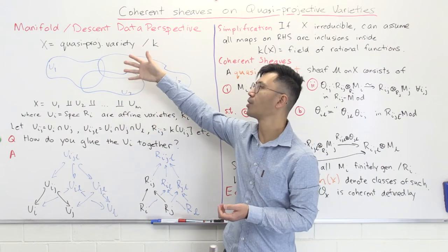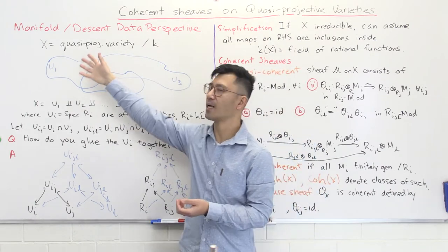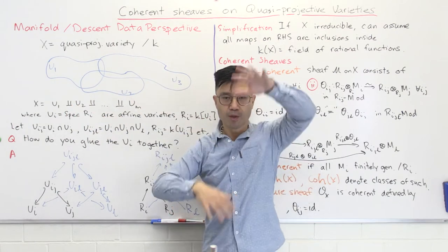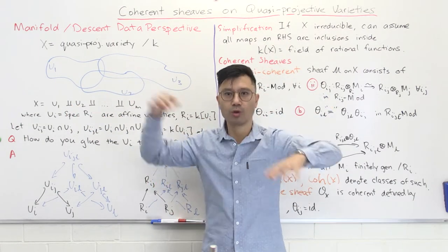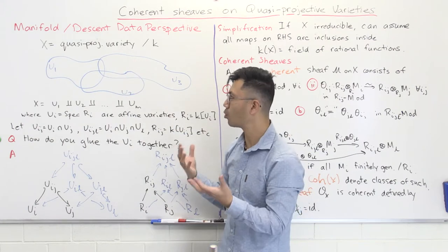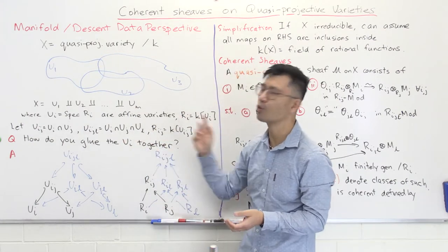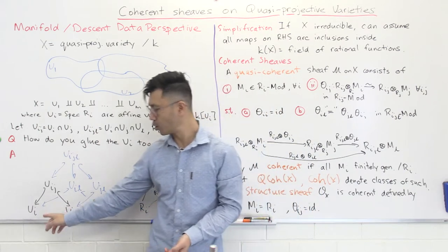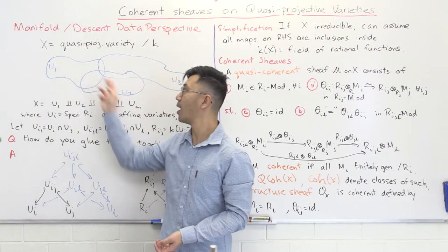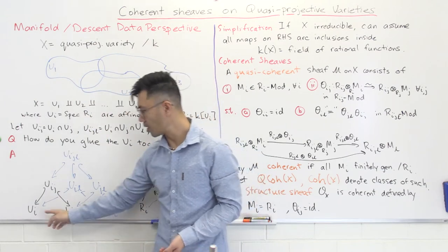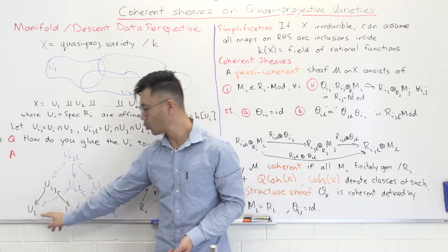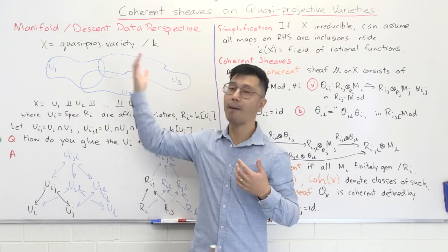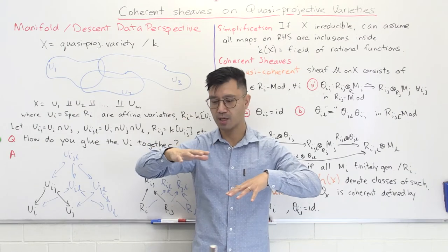We want to think about X as being built up from these affine varieties — treating them as separate affine varieties — and then gluing them together to get X. To glue Uᵢ to Uⱼ, it's similar to what happens with manifolds where you need transition functions. You identify an open subset of Uᵢ which is the intersection, and an open subset of Uⱼ which is the intersection, and you have an isomorphism between them.